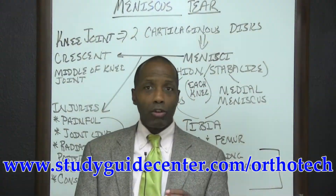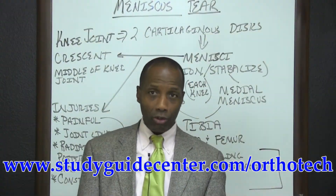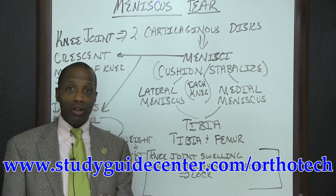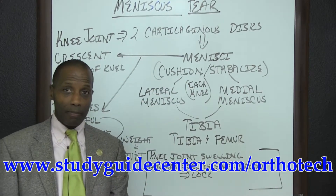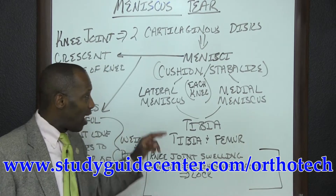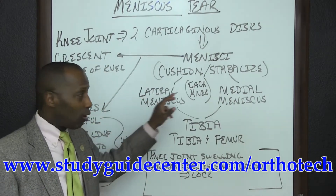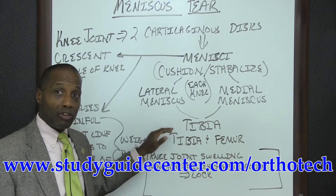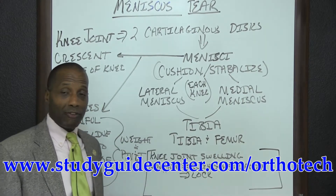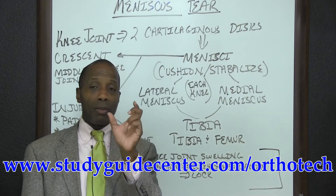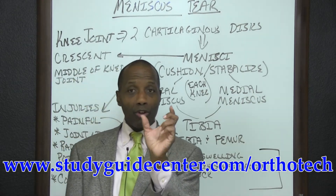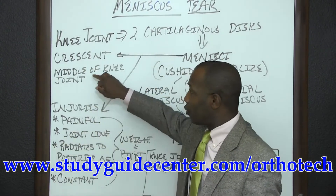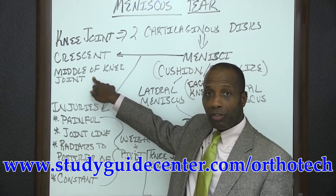The knee joint contains two cartilaginous discs, or menisci. The menisci cushion and stabilize the knee joint. In each knee you have the lateral meniscus along with the medial meniscus, and they're located on the tibia and between the tibia and the femur. When you look at it, the meniscus is shaped as a crescent, with the open part of the crescent shape facing towards the middle of the knee joint.